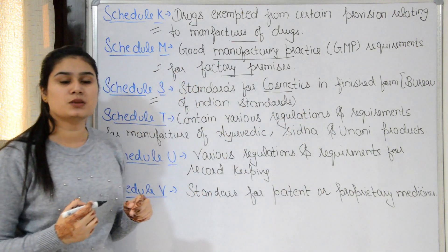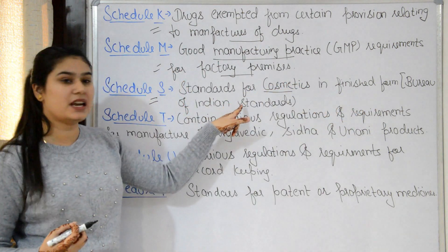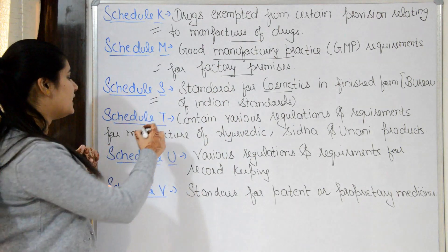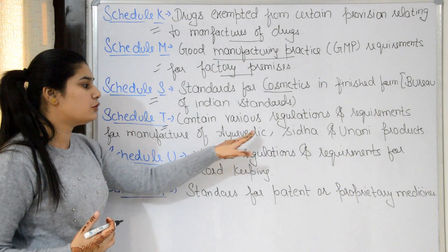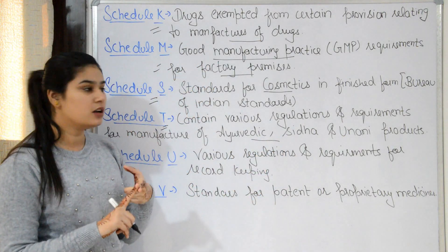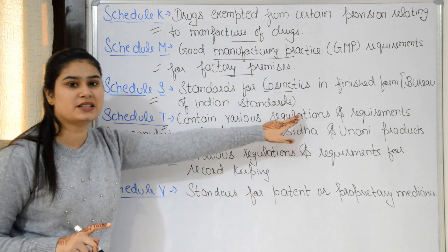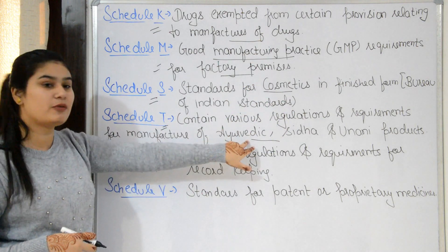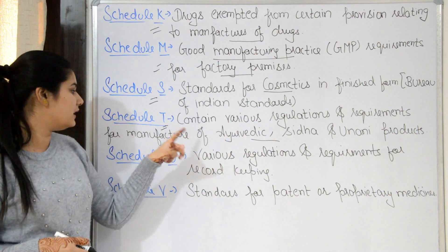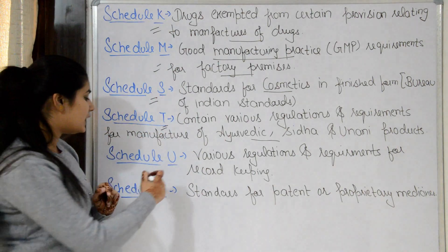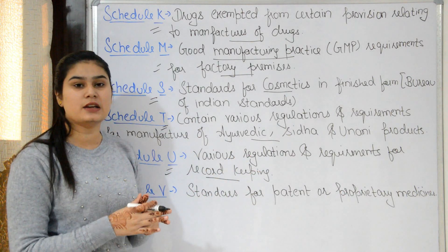Schedule S contains standards for cosmetics — what standards, rules and regulations apply to cosmetics, including Bureau of Indian Standards, are in Schedule S. Schedule T contains various regulations and requirements for the manufacturing of Ayurvedic, Siddha and Unani products — including raw material requirements and manufacturing rules and regulations, all under Schedule T.